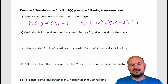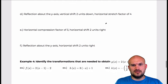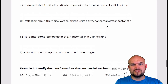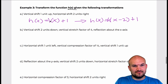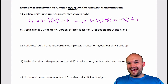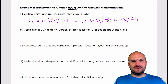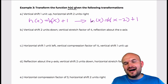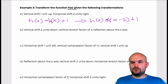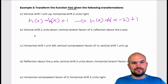So your h of x — here's your h of x — and then you're going to add one. I have h of x equals h times x minus 2 plus 1.